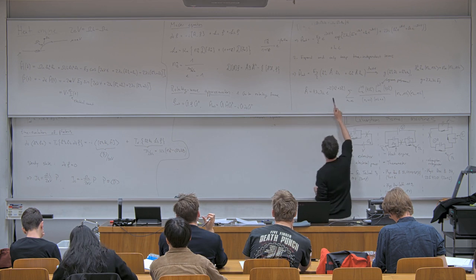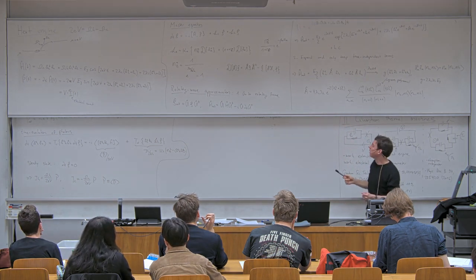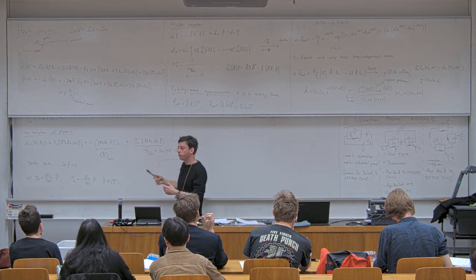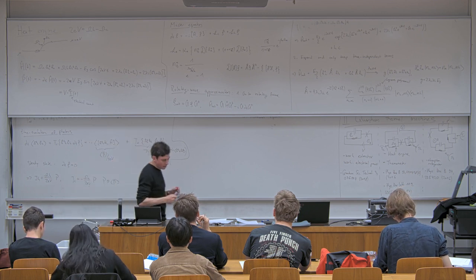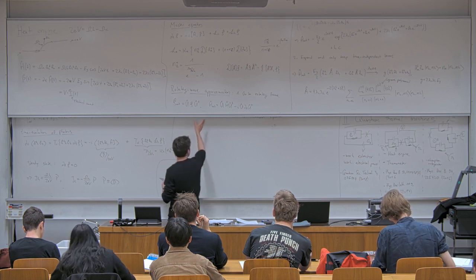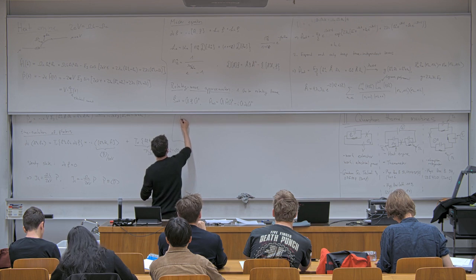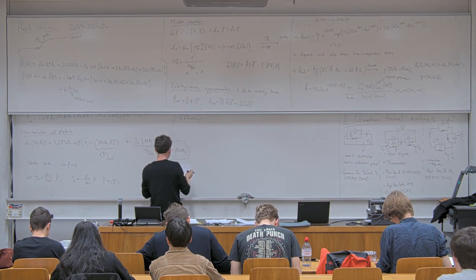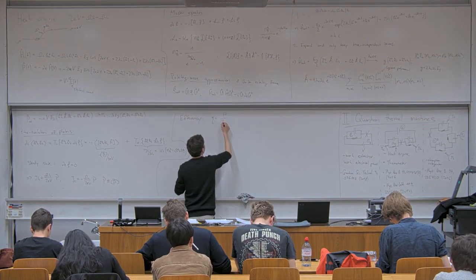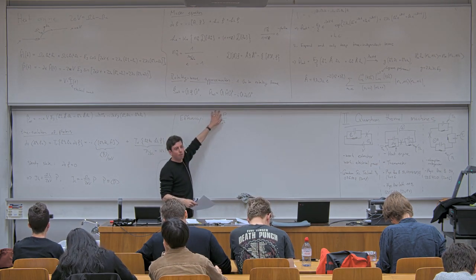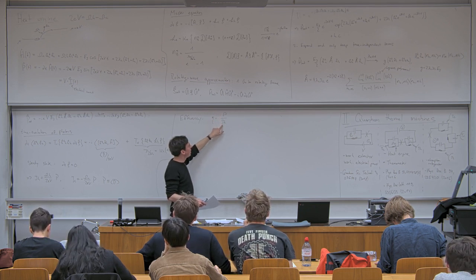An important point: the total number of photons in the system is conserved — you can't destroy or create photons in the system. Photons either have to come from or leave to the thermal bath; that's the only way to change the total photon number. There's no sink or source of photons in the system. Now a very important quantity to characterize heat engines is the efficiency, defined as the ratio between the power and the heat current from the hot bath. The heat current is our resource, and the efficiency tells us how much power we get out per resource consumed.